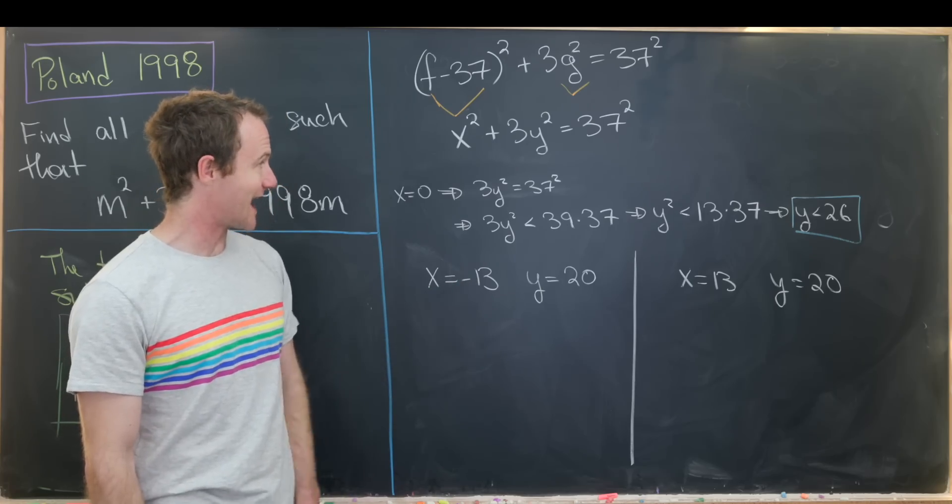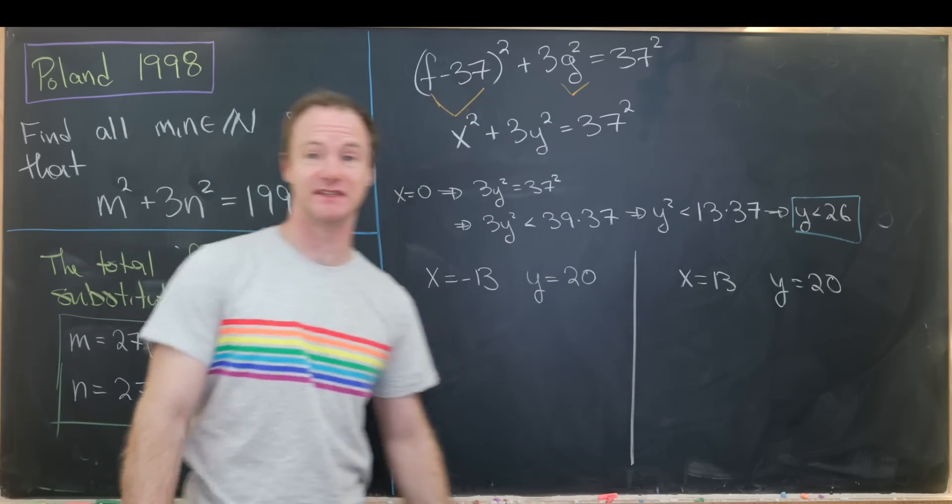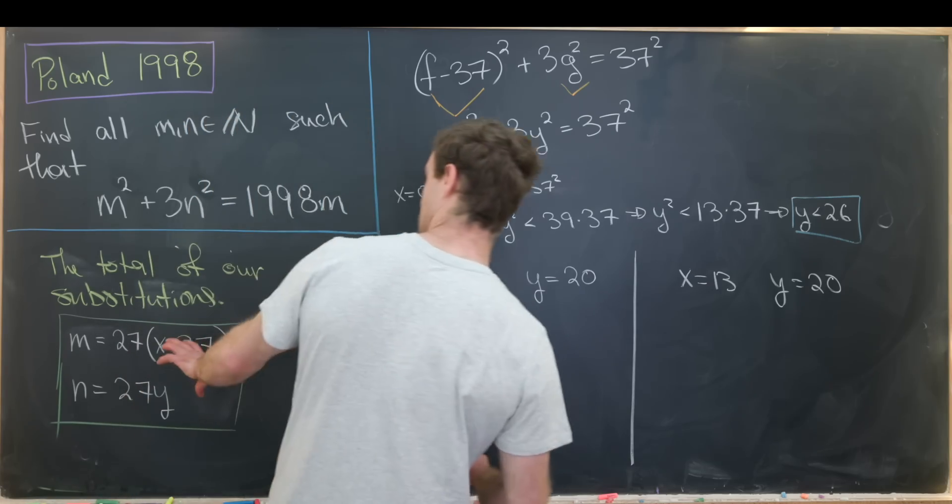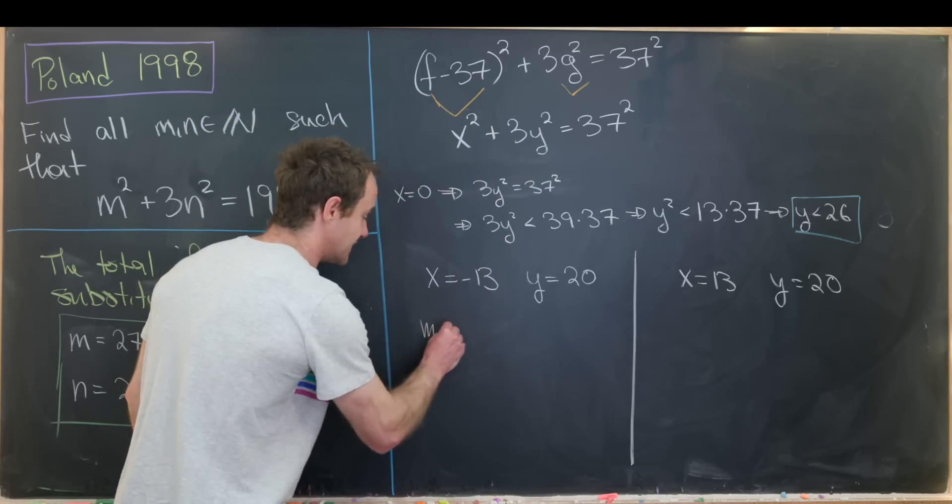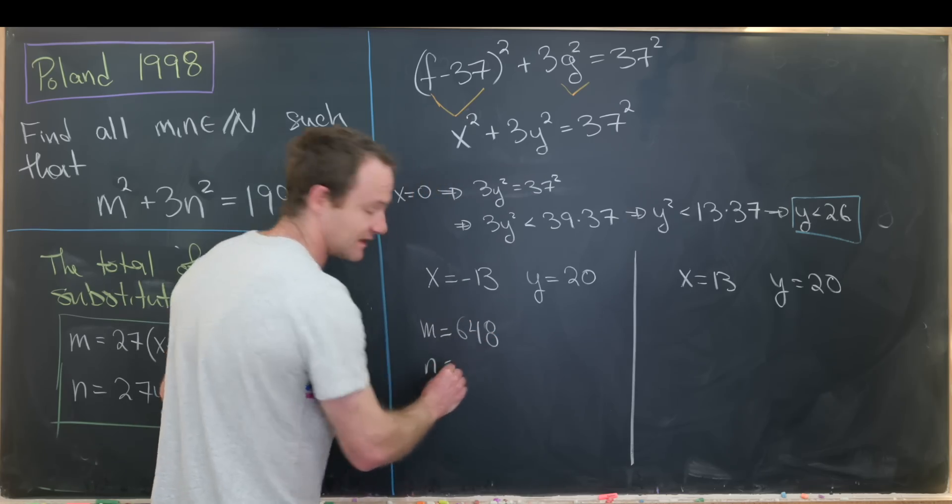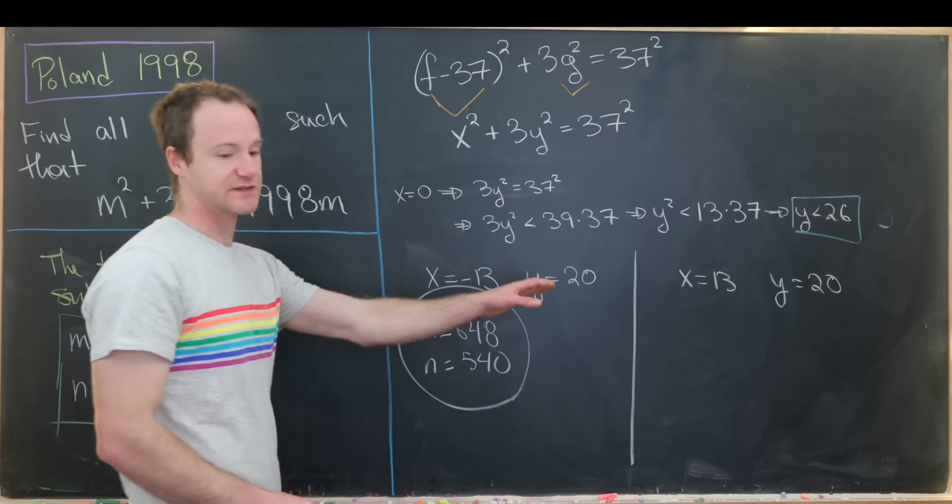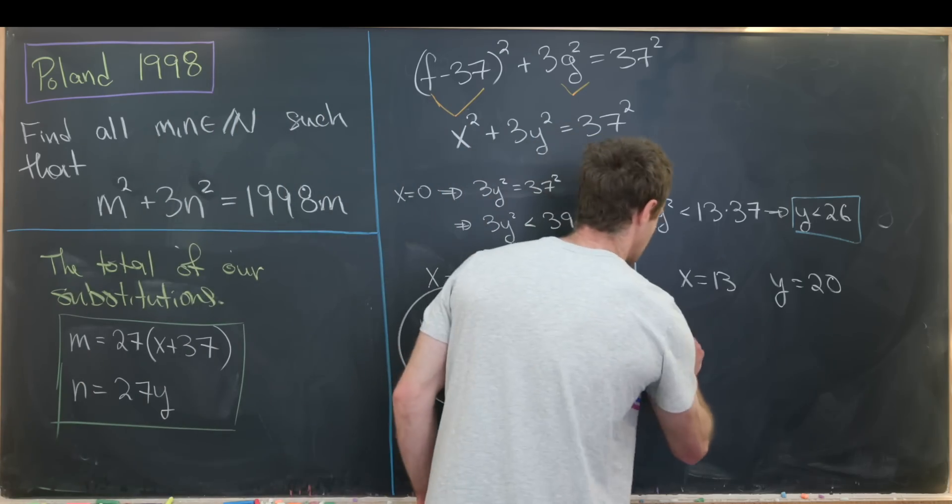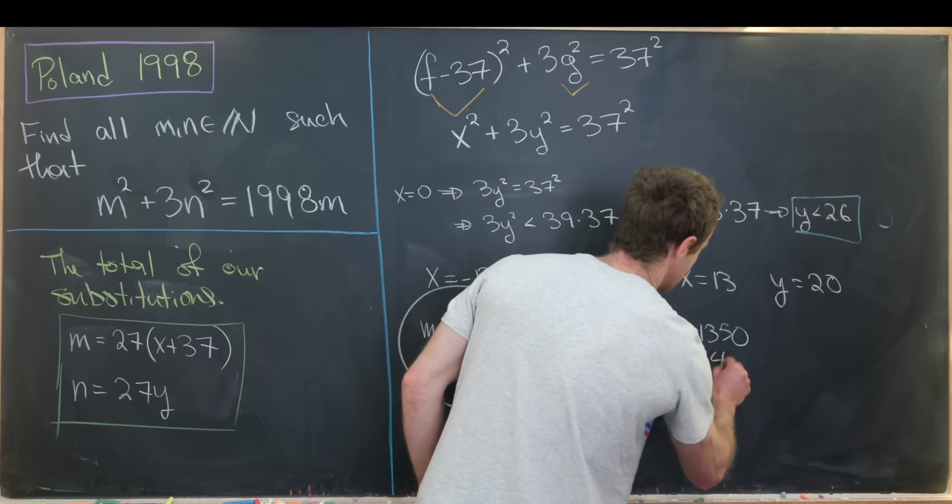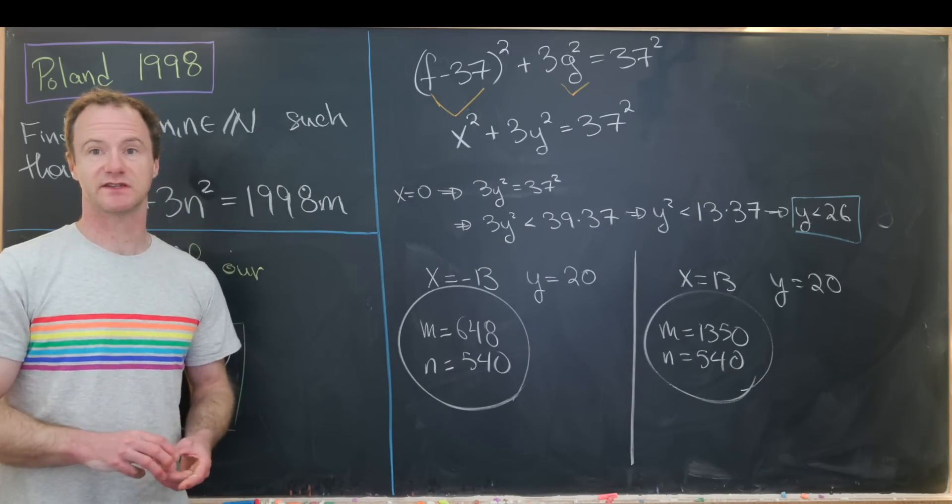We are allowing x to be equal to negative 13 because plugged back in over here, that still gives us m a natural number. So anyway, plugging these back into our substitution, we'll see that this one gives us a solution of m equals 648 and then n equals 540. And then this one over here gives us a solution of m equals 1350 and n is still equal to 540. So those are our two solutions. And that's a good place to stop.